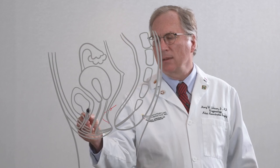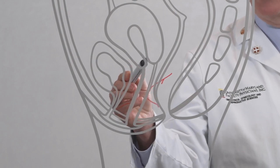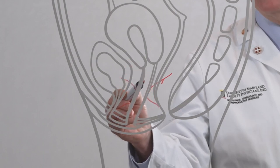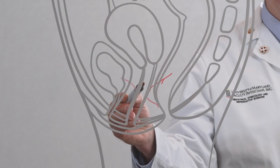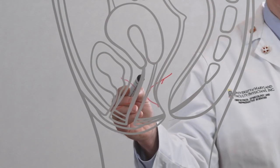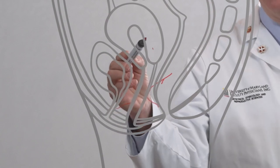If it's the bladder that bulges in, it's called cystocele. If it's the uterus that's falling down, it's called uterine prolapse. And if it's the vagina falling down, it's called vaginal prolapse. This generally occurs when the uterus has already been removed.